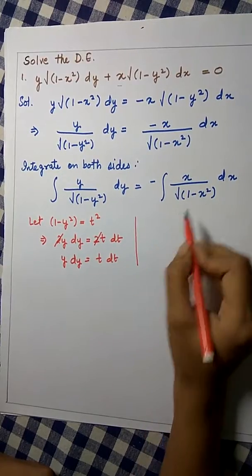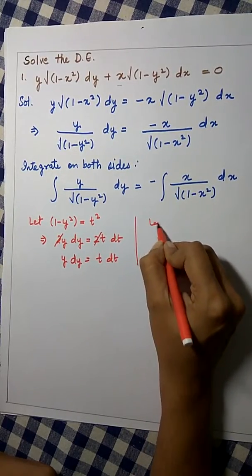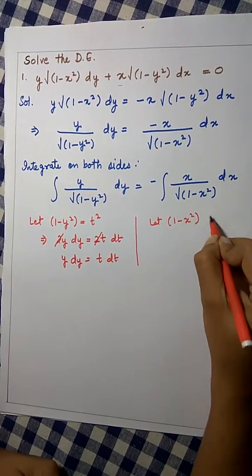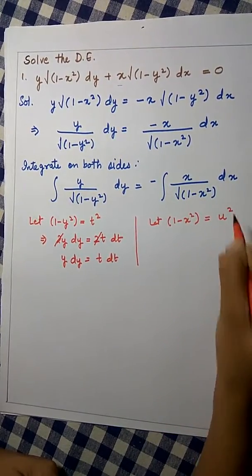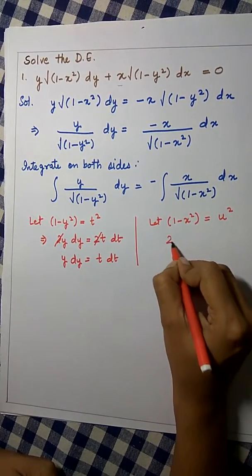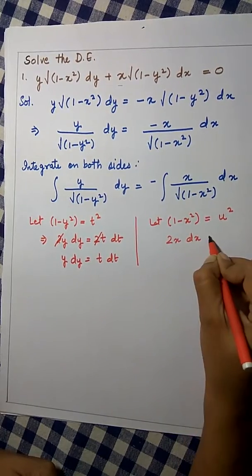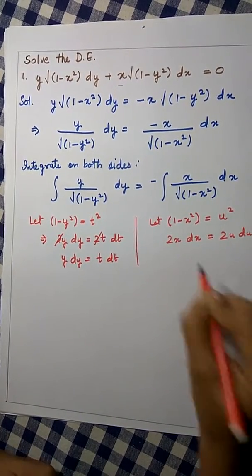Likewise, let us take 1 minus x square be u square. This will give us negative 2x dx equals 2u du.